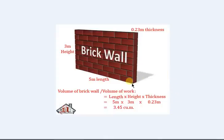So let's start with the tutorial. Let us consider a wall of length 5 meters, height 3 meters, and thickness of 0.23 meters. To calculate the volume of work to be done, or the volume of brick wall, the formula is: length of wall multiply by height of wall multiply by thickness of wall.